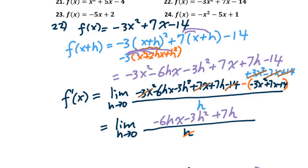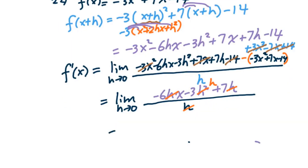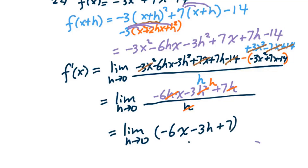We reduce by factoring out h from the numerator. We get the limit as h approaches 0 of -6x - 3h + 7. Then we perform the limit operation by plugging h = 0, so -3 times 0 equals 0. Therefore, the derivative is -6x + 7.